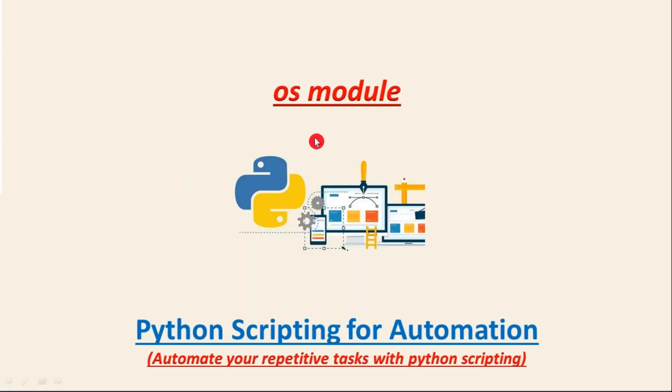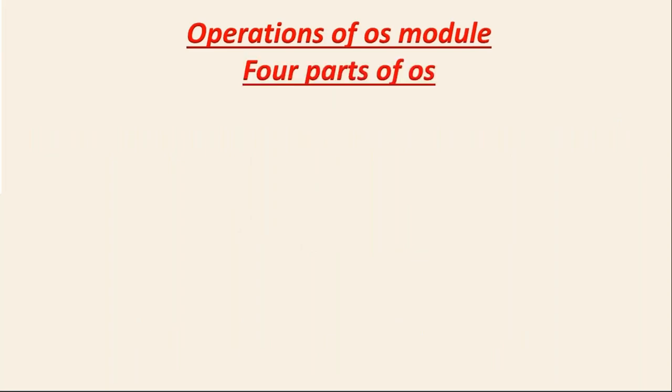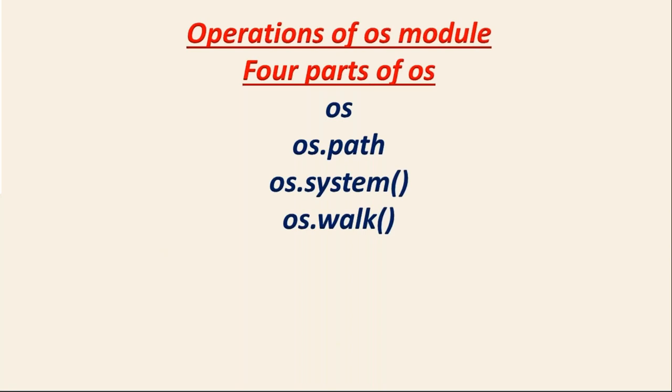Here we are going to discuss the OS module, which is very important whenever you are going to automate your tasks at the server side. Using the OS module you can work and interact with your operating system. Whenever you are able to interact with your operating system, you can automate tasks like creating directories, removing, changing, and knowing your directory, and many more. I am dividing this module into four parts: simply os and os.path, then os.system, and then os.work, to explain step by step.